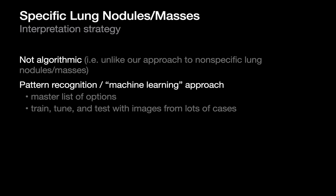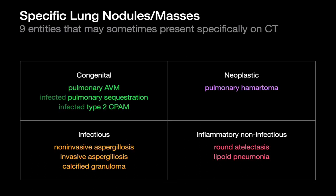But occasionally, we'll be able to shortcut that algorithmic process when the nodular mass is specific. For these specific nodules and masses, there's really not a step-by-step approach — it is basically a pattern recognition kind of thing. We have to know what these generally look like so that we'll recognize them in the future. I always joke it's kind of like human machine learning.